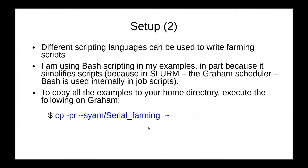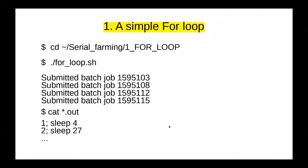One can use all kinds of scripting languages to automate serial farming processing. For example, the popular Python can be used. I chose to write all my scripts using bash scripting, in part because of convenience — the fact that SLURM, which is the Graham scheduler, uses bash internally in job scripts makes it natural to just continue using bash. But it's perfectly fine to mix scripting; you can write higher-level scripts in Python and write the job script in bash. All the examples I'll be talking about are available to any Graham user. You just log into Graham and copy the whole set using the command listed here.